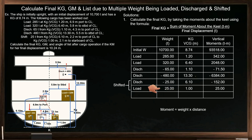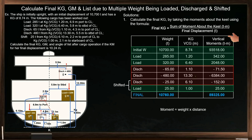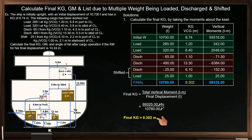Next, add all the loaded weights to the ship's initial displacement and subtract all the discharged weights to determine the ship's final displacement, which is 10,760 tons. Do the same for the vertical moments — add all positive and subtract all negative moments to determine the total vertical moment, which is 89,325 tonne-meters. This value is the sum of moments about the keel. To calculate the final KG: 89,325 tonne-meters divided by 10,760 tons gives a final KG of 8.302 meters.